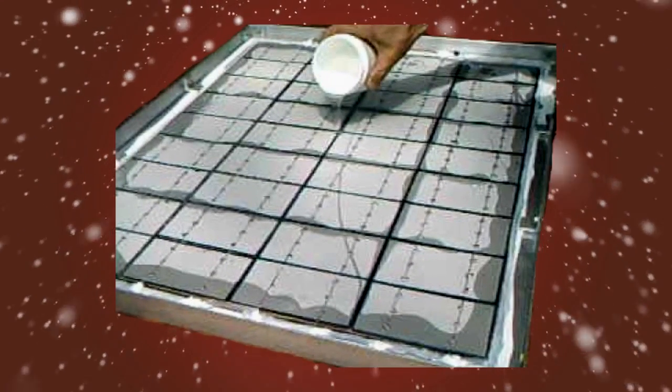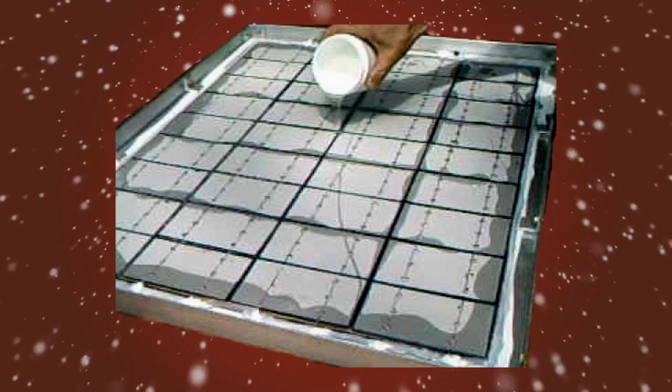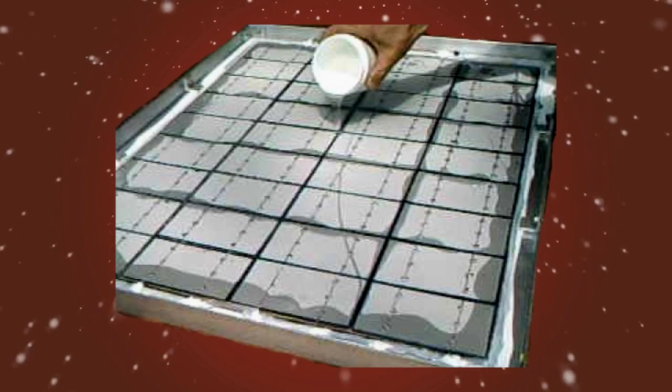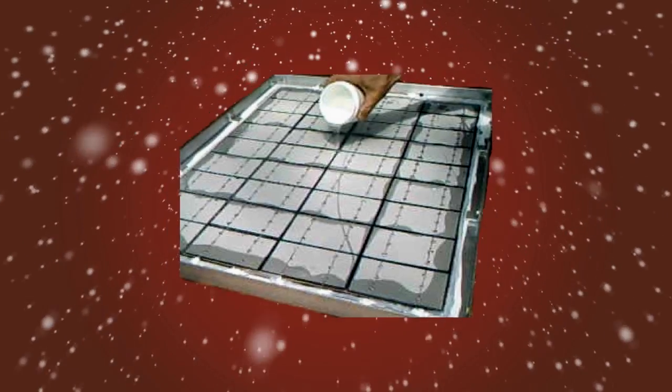The next step, if you applied the Sylgard 184, is to bring your solar panel out in the sun, test it again to make sure you're getting the proper amount of voltage, and let it sit out in the sun for a few days and let the Sylgard 184 harden.